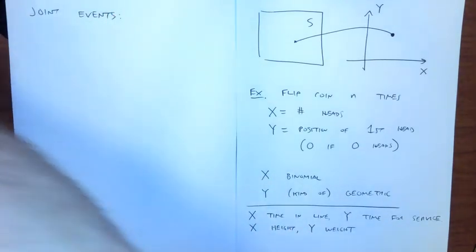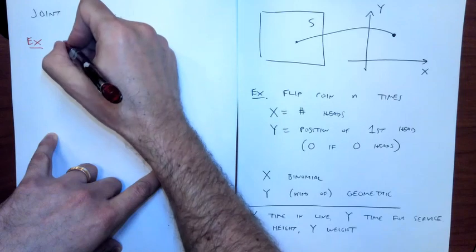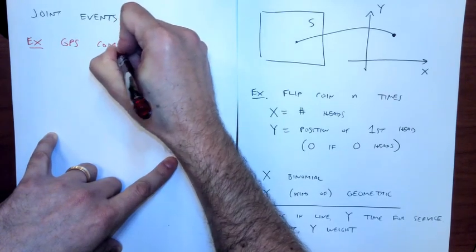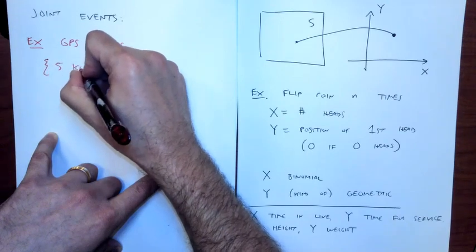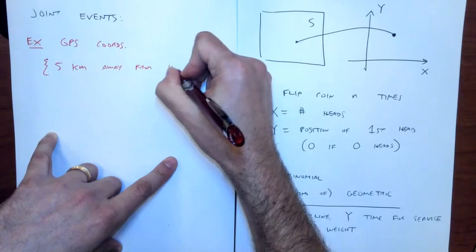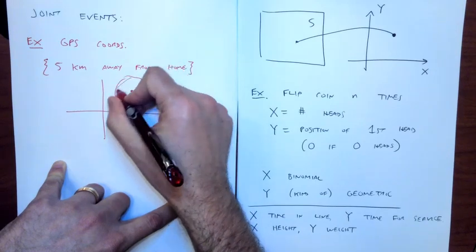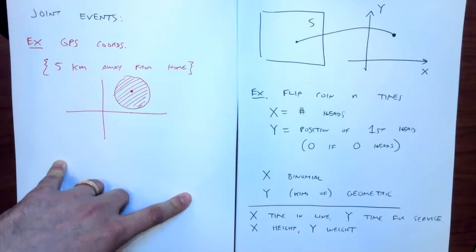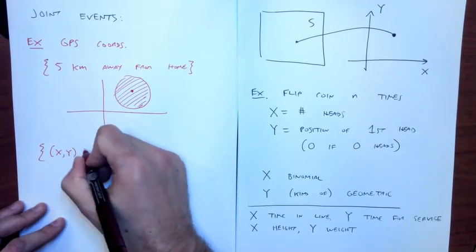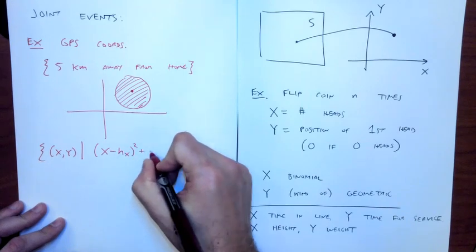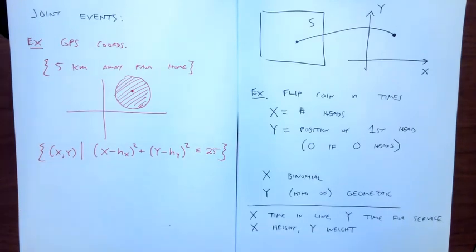For example, in the GPS case, I could ask: what is the event corresponding to being five kilometers away from home? I could draw a circle around where my home is — the set of points (x, y) such that (x minus home_x)² + (y minus home_y)² ≤ 25. That circle is the event corresponding to being within five kilometers of home.